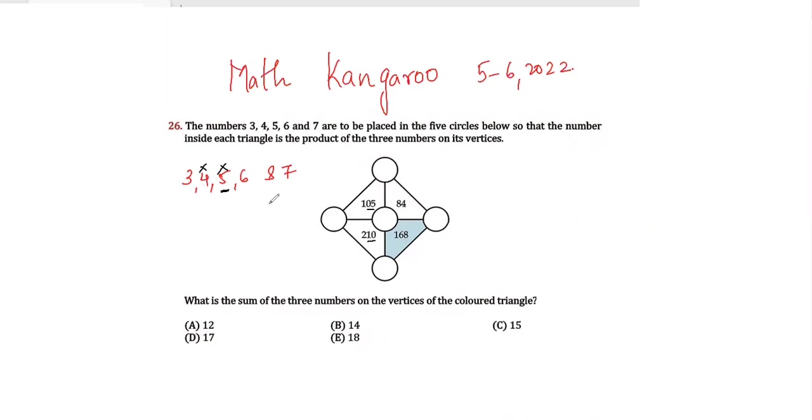Then we check for 3. Divisibility rule for 3 is you have to add the digits and see whether it's a multiple of 3. So 1 plus 5 is 6, divisible by 3. Similarly, 2 plus 1 plus 0 is 3, again divisible by 3. 8 plus 4 is 12, which is a multiple of 3. 1 plus 6 plus 8 is 15, also divisible by 3. So I can possibly put 3 here.